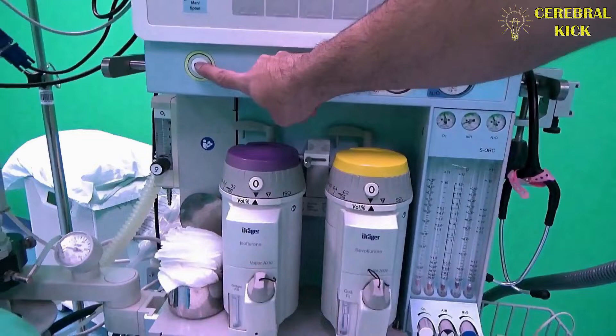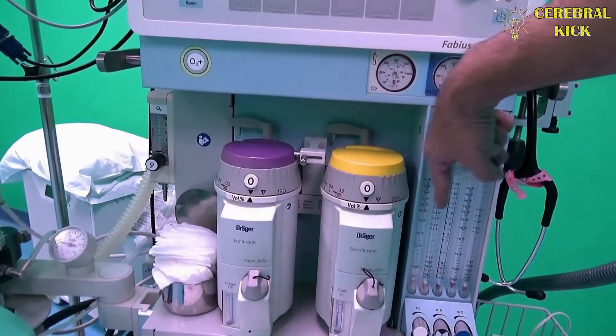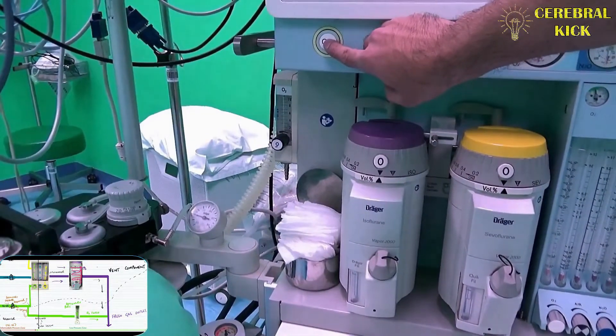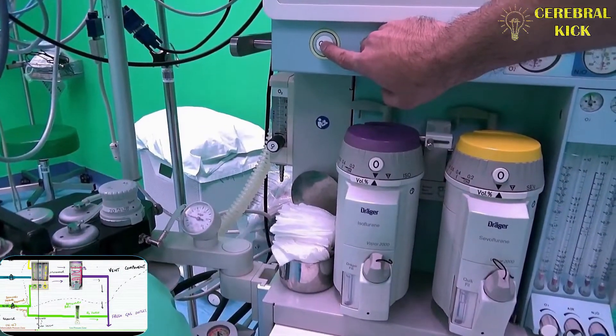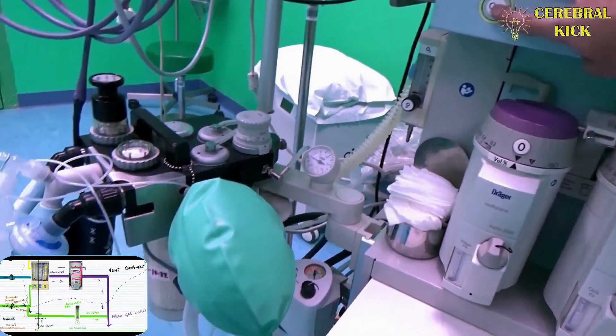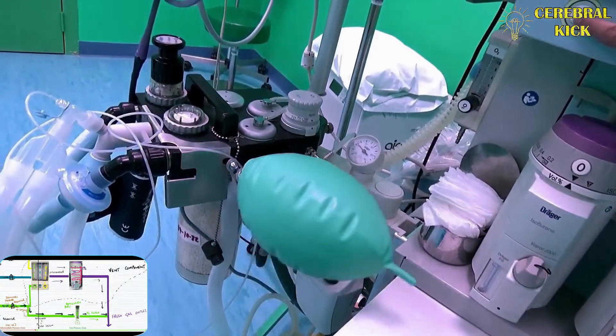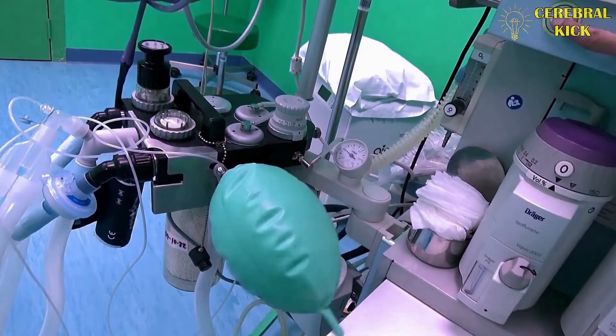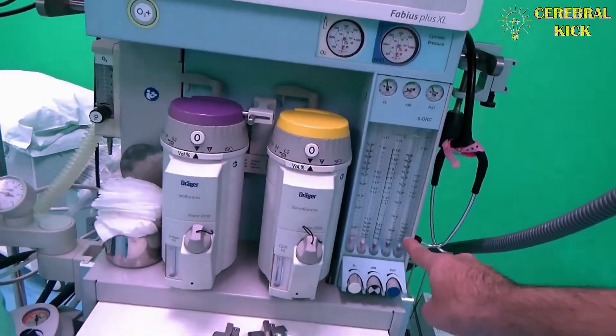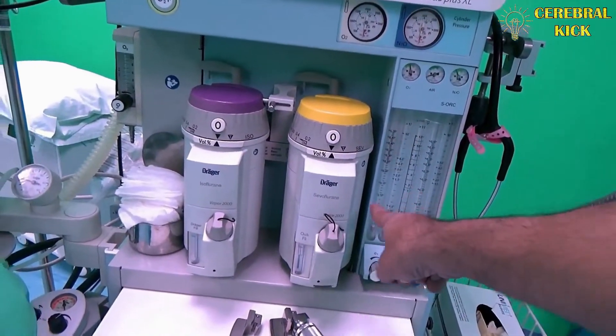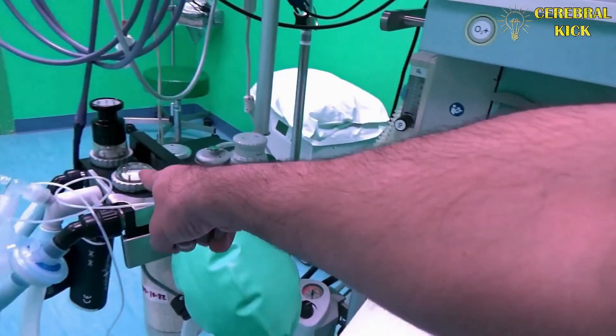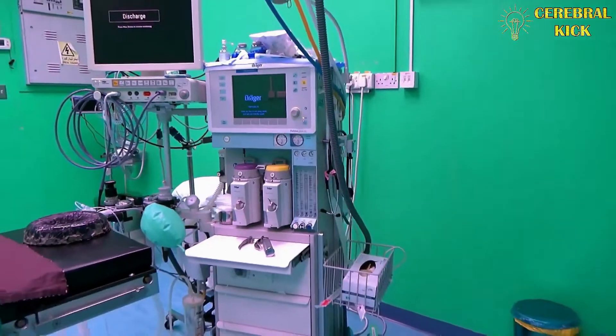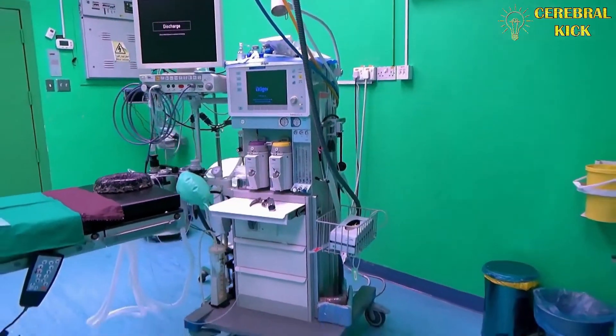We discussed that the oxygen flush bypasses the low pressure zones of vaporizers, flow meters, and the breathing circuits, and it directly delivers a thrust of oxygen to the patient. So if I press oxygen flush here, what would happen? See, the gases have gone directly into the breathing circuit. It has bypassed the intermediate zone, the flow meters, the vaporizers, and it has gone straight to the patient circuit. These are the pressure zones that we have covered in the overview of the anesthesia workstation.